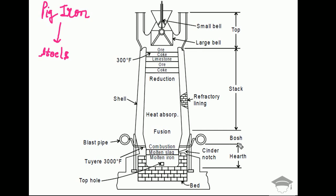Here on the screen you can see a cross-sectional view of a typical blast furnace that is common across the world, used to produce pig iron. The blast furnace's main application is to produce pig iron. After producing pig iron, we use other processes and furnaces and add carbon in order to produce different steels. Pig iron is the most raw form of iron.